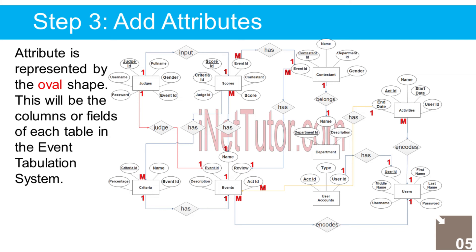Contestant entity also has: 4. DepartmentID — foreign key, 5. EventID — foreign key. Department entity has the following attributes: 1. DepartmentID — primary key (represented with underline), 2. Name, 3. Description. Criteria entity has the following attributes: 1. CriteriaID — primary key, 2. Name, 3. Percentage, 4. EventID — foreign key. Scores entity has: 1. ScoreID — primary key, 2. CriteriaID — foreign key, 3. EventID — foreign key, 4. JudgeID — foreign key, 5. ContestantID — foreign key, 6. Score. Judges entity has: 1. JudgeID — primary key, 2. Full Name, 3. Gender, 4. EventID — foreign key, 5. Username, 6. Password.